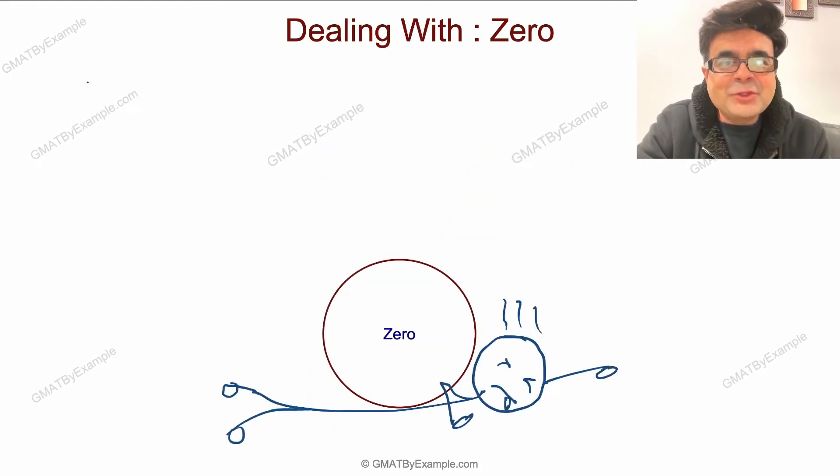Hello everyone, I am Abhijit. Whether you are just starting your GMAT preparation or you're already an advanced GMAT test taker, zero can still take you down. You may know all the properties of zero and still get a question involving zero wrong. How? Please watch this short video in full to really understand. Before we go any further, please do not forget to like this video and subscribe to my channel.